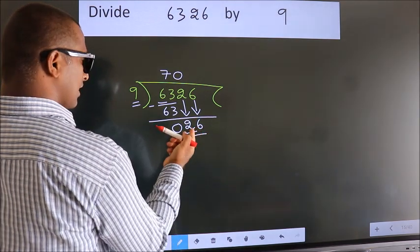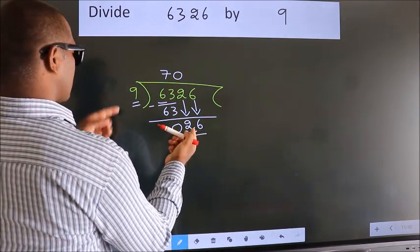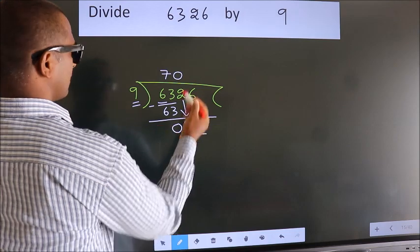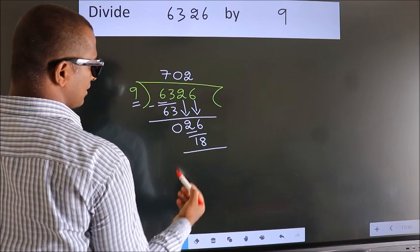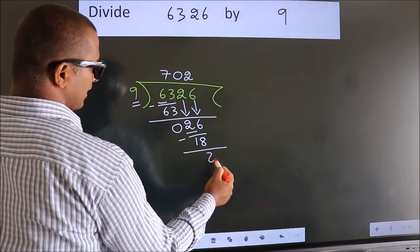So 26. A number close to 26 in the 9 table is 9 times 2, which is 18. Now we subtract. We get 8.